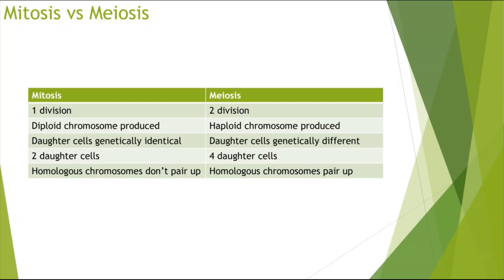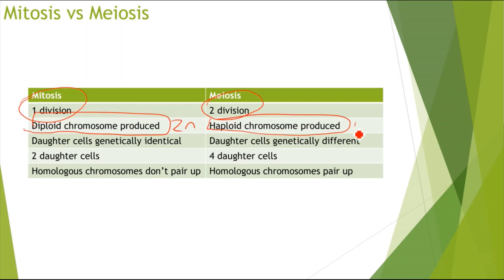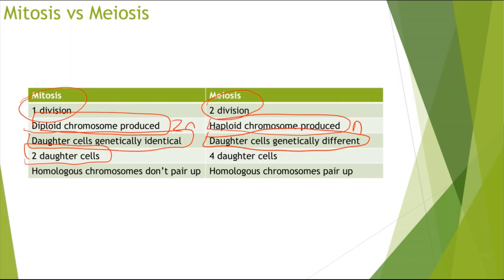Key differences between mitosis and meiosis: Mitosis has one division; meiosis has two. Mitosis forms diploid cells (2N, e.g. 46 chromosomes in humans); meiosis forms haploid cells (N, e.g. 23 chromosomes). Mitosis produces genetically identical daughter cells; meiosis produces genetically different ones. Mitosis produces two daughter cells; meiosis produces four. Finally, in mitosis homologous chromosomes do not pair up, whereas in meiosis they do pair up, which enables processes like crossing over.